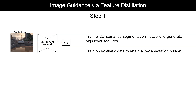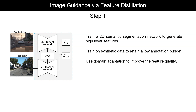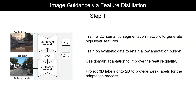To further improve the quality of our image features, we propose using a domain adaptation pipeline to align our source domain onto the target. We further supervise the domain adaptation task via weak image labels, generated by projecting the LiDAR labels onto the corresponding image. Before moving on to the second step, we freeze our image guidance network.